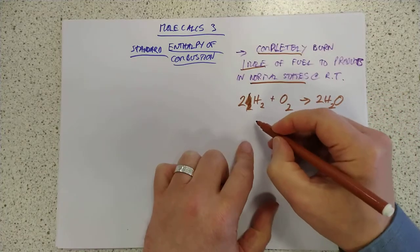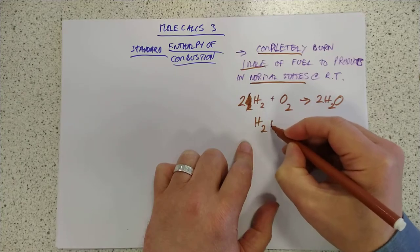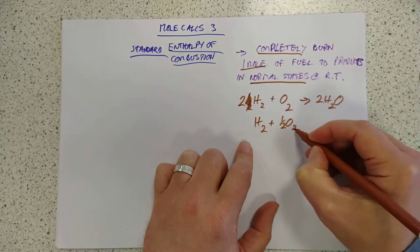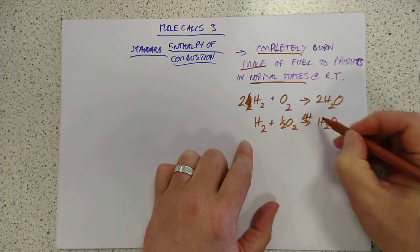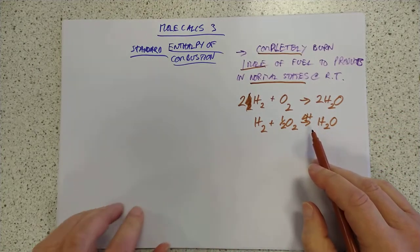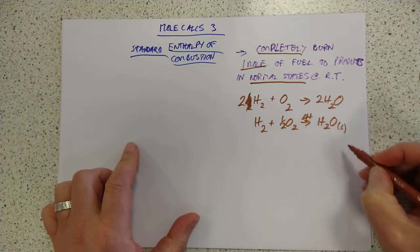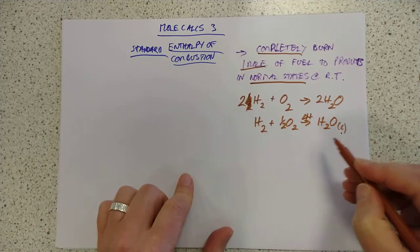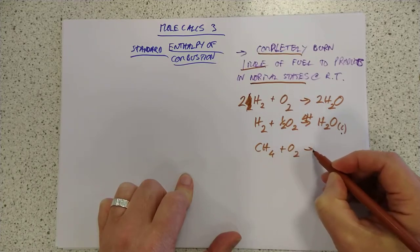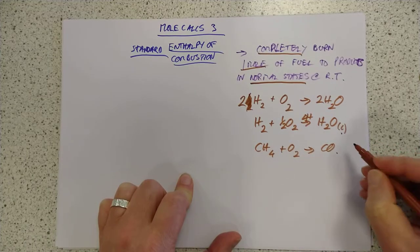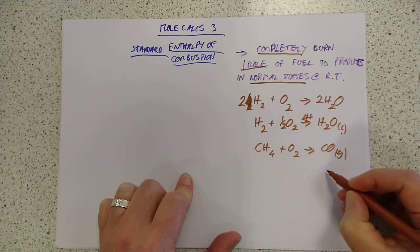But you'd have to rebalance that equation and have it like this. And then whatever enthalpy change that is, that delta H there, that is indeed the standard enthalpy of combustion of hydrogen. That would need to be a liquid in order to make that bit happy.